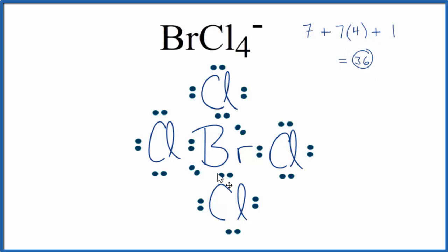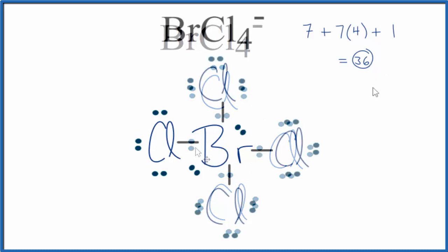Each chlorine has an octet. The bromine has more than eight, that's okay, it can have an expanded octet. It might be clearer if we replace these bonds with lines. And the lines represent this single bond pair of electrons.